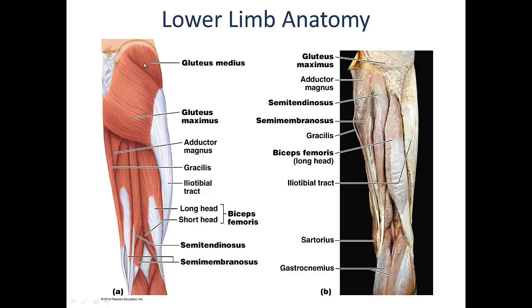The gluteus medius and minimus are smaller in size and more laterally located. As such, their contribution to hip extension is limited, but they can be used for hip abduction and internal rotation as well.